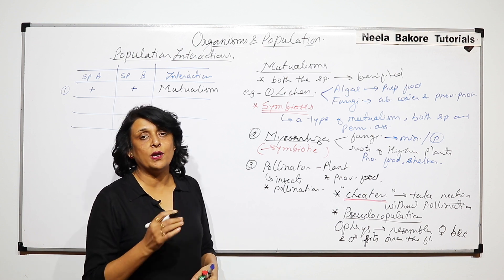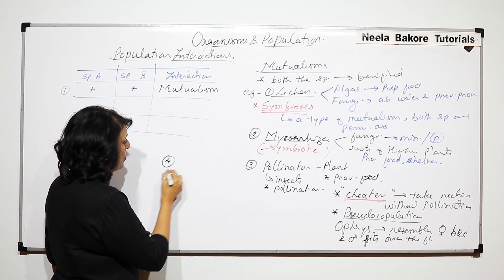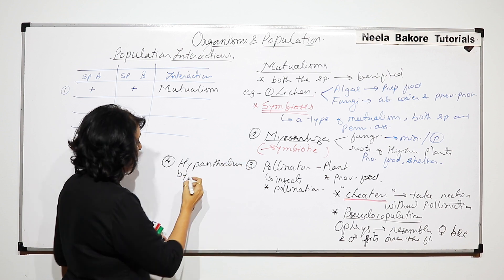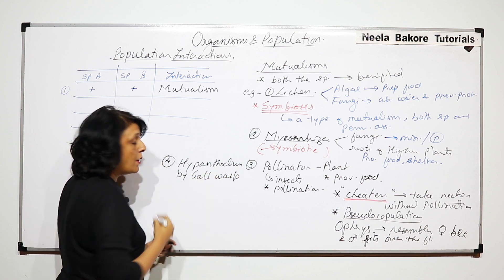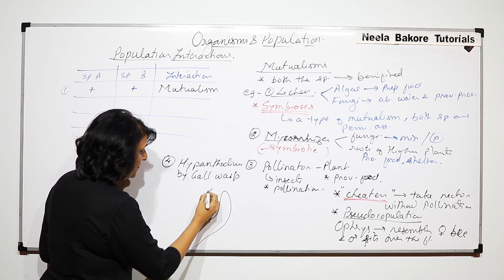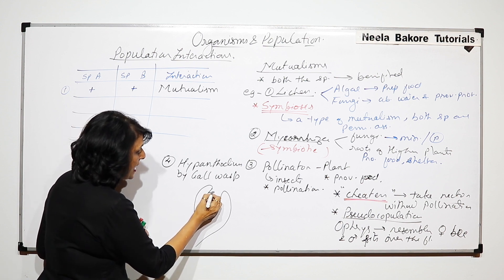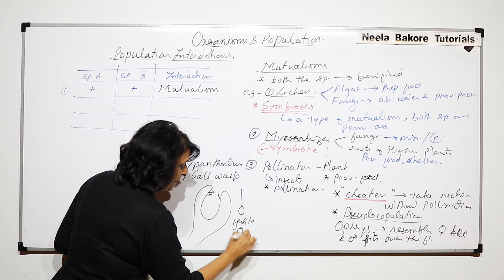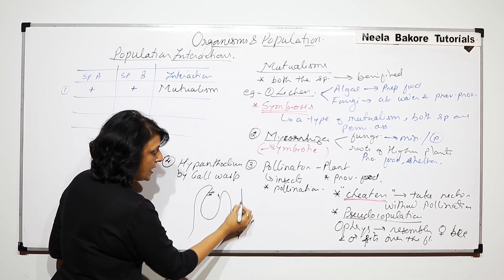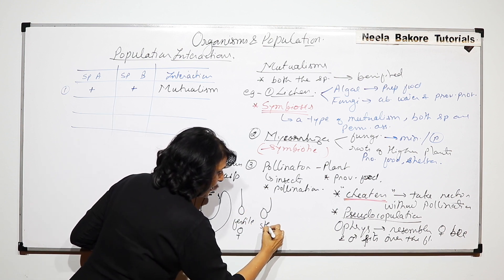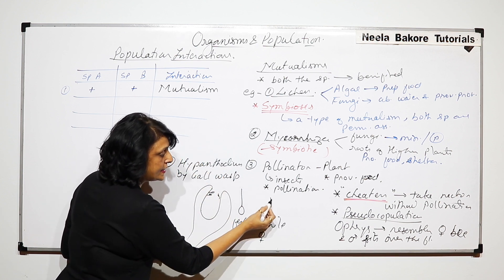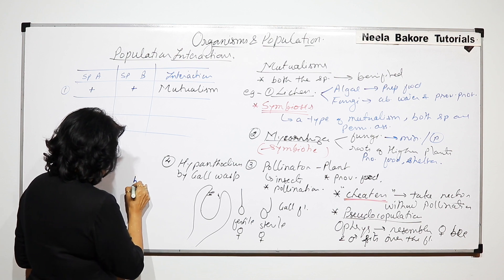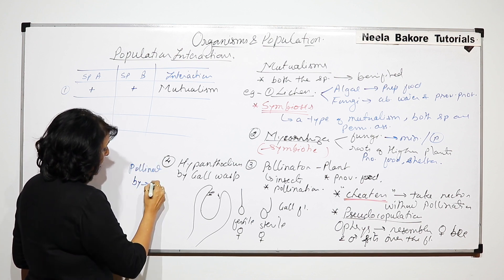We will take one more example again of pollinator and the plant and this example is of pollination in Hypanthodium by a particular insect which is called the gall wasp. Now, in case of Hypanthodium what happens is Hypanthodium is an inflorescence and in this inflorescence, the male flowers are at the tip. There are two types of female flowers. The fertile female flowers, this is the fertile female flower which has the terminal style. So style is going to arise from here and there are some female flowers which are sterile. This is sterile female flower and the style is arising from the side. Such flowers are known as gall flowers.